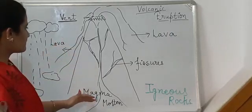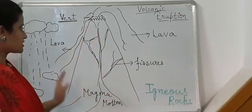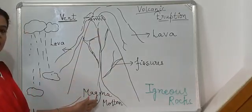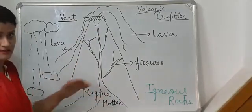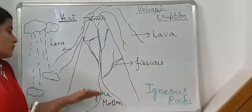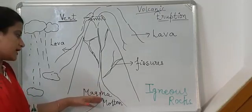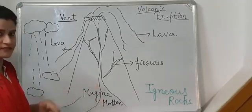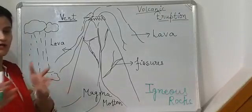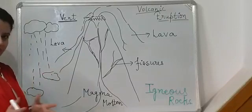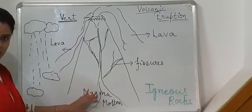This is a volcanic mountain, as you can see very clearly. Obviously, inside the mountain — under the ground, under the crust — there are rocks in the mantle. These rocks become molten under high temperature. Under high pressure they solidify again, but under high temperature they remain in molten form.